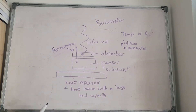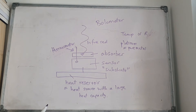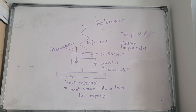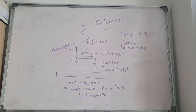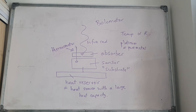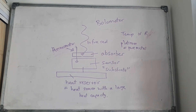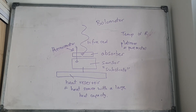A bolometer is an instrument that measures the change in radiation — specifically, a change in temperature due to incident radiation. It's usually used for the infrared and millimeter range of the electromagnetic spectrum. When the infrared light hits the absorber, there's a change in temperature.